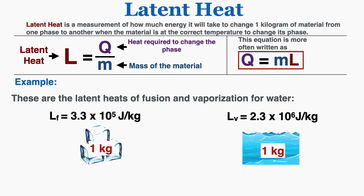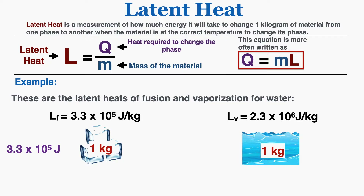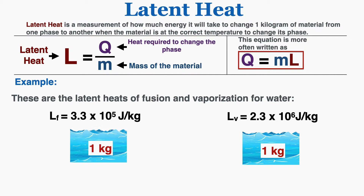So if we imagine that we have one kilogram of ice and we want to change it entirely to water, that latent heat of fusion tells me that I need exactly 3.3 times 10 to the fifth joules to completely melt the ice to water, assuming that the ice is at its melting point of zero degrees Celsius. Adding this amount of energy will convert all of the ice into water — that's what the latent heat of fusion is physically telling me.